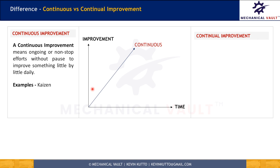Kaizen is a form of continuous improvement. Ka means change and Zen means good. In Kaizen, we identify an area of improvement and we keep on improving it on a daily basis, little by little, to make it better than the previous state. Lean manufacturing or Kaizen aims to improve efficiency within an organization by eliminating waste or non-value-adding activities in the process and reducing defects by taking actions every day.